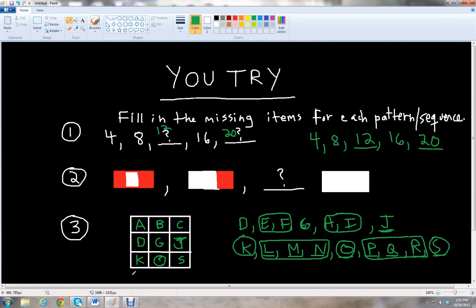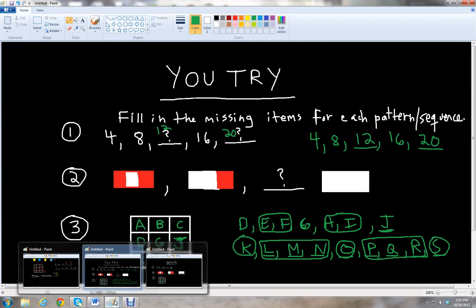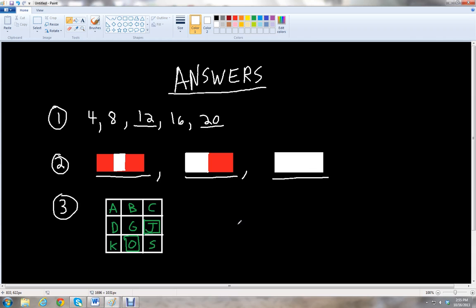So let's check the answers. Four, eight, twelve, sixteen, twenty. Red, two parts red one part white, two parts white one part red, and then we have all white for the bar. And then we have our A, B, C, D, G, J, K, O, S for our pattern letters.